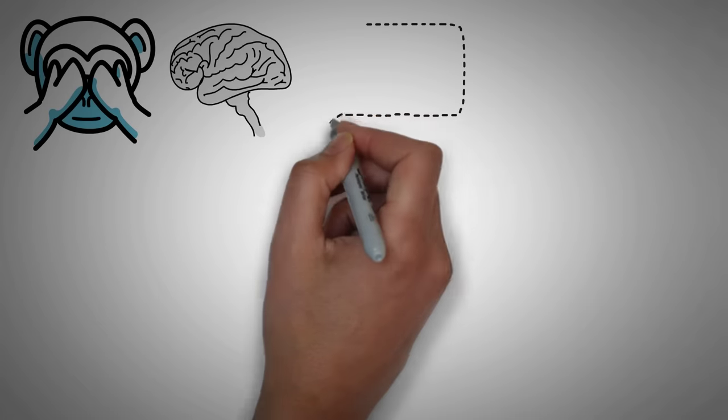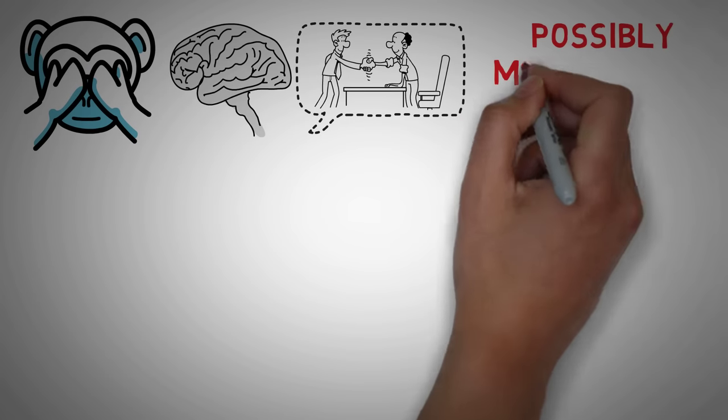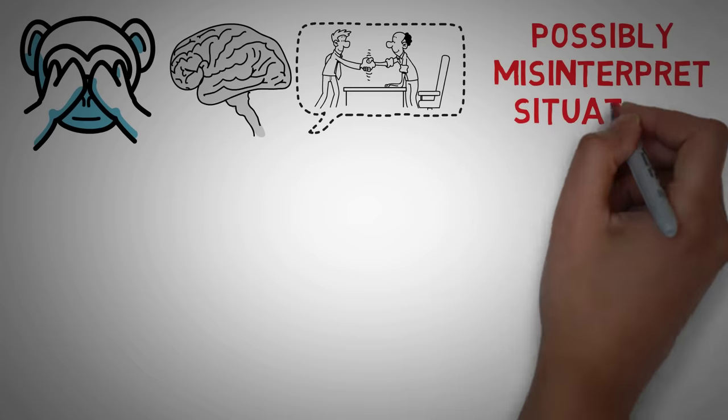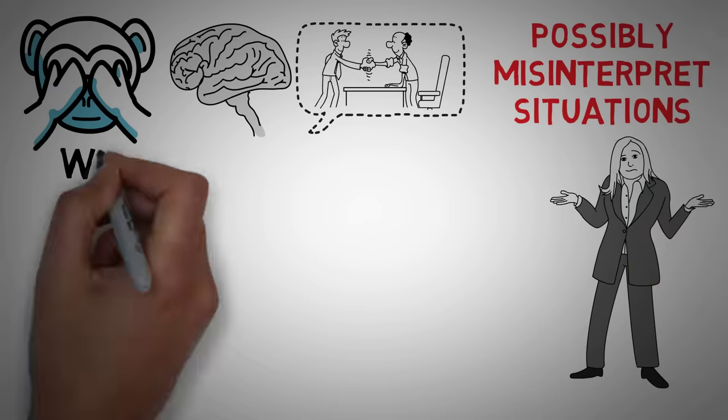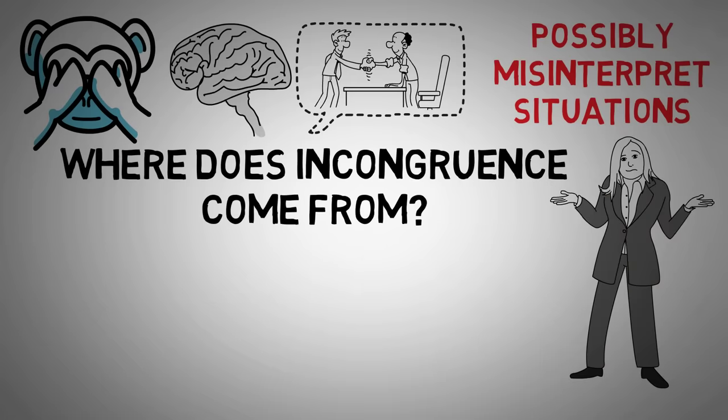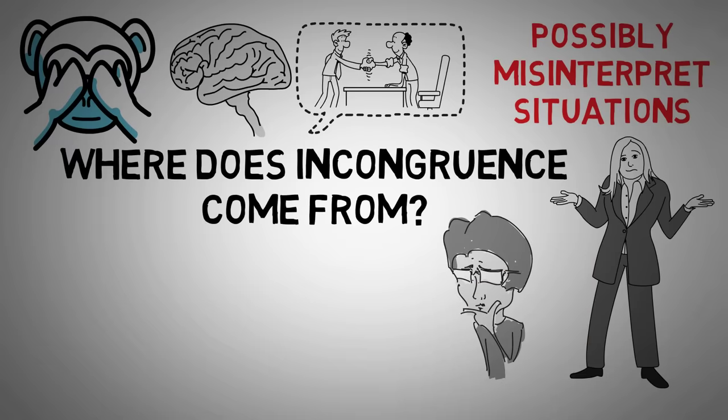A person who only believes that they are agreeable may unconsciously choose to remember positive, agreeable interactions, or they might even misinterpret situations in which they were not actually displaying agreeable behavior. Their whole perspective changes. So where does this incongruence come from? How can we develop a more objective sense of ourselves within this world and actually try to reach self-actualization?